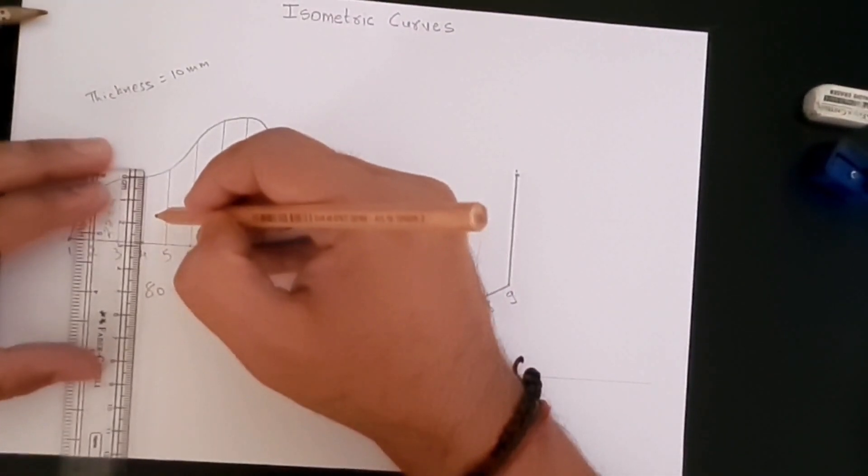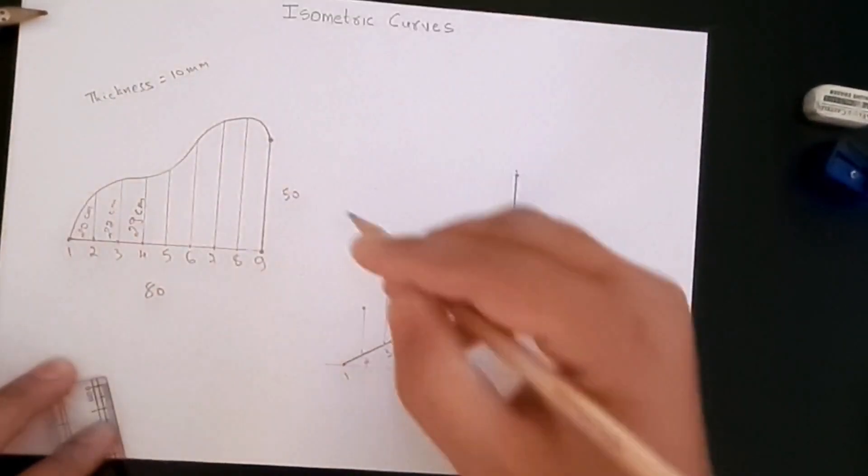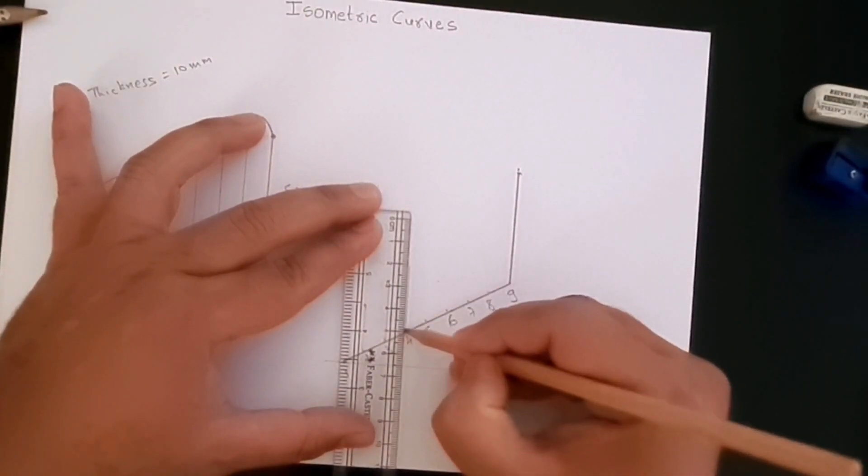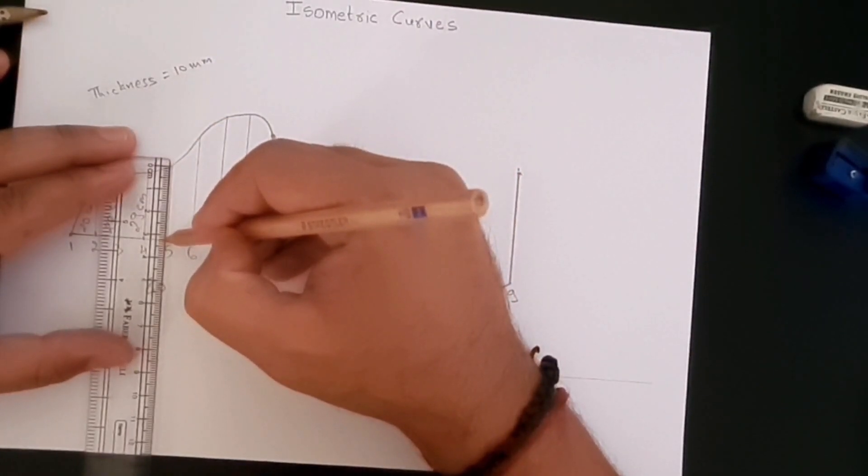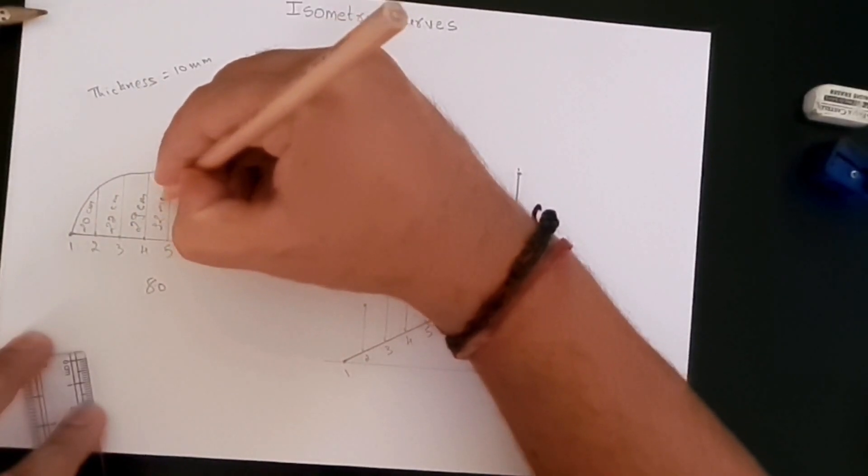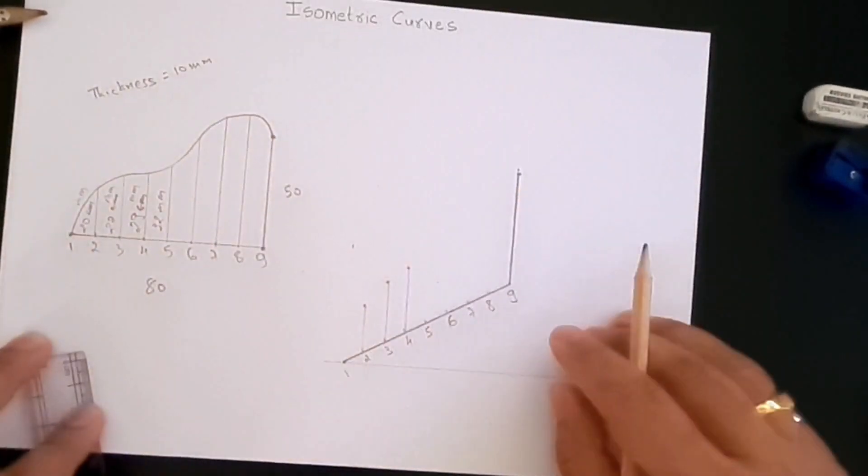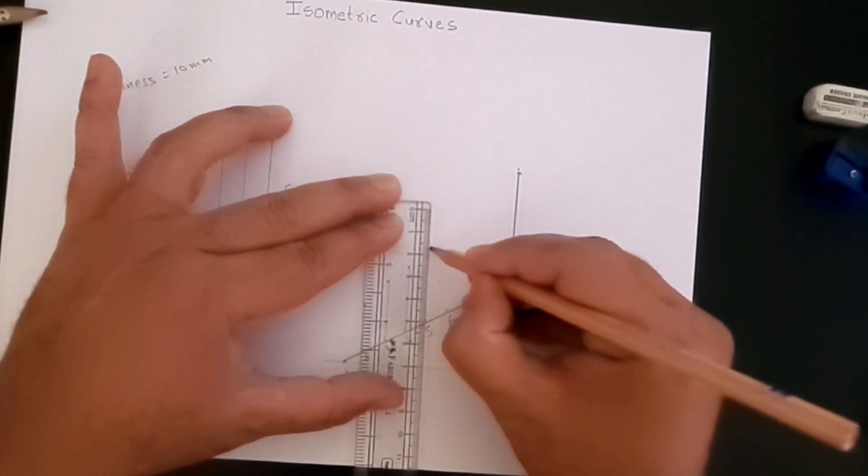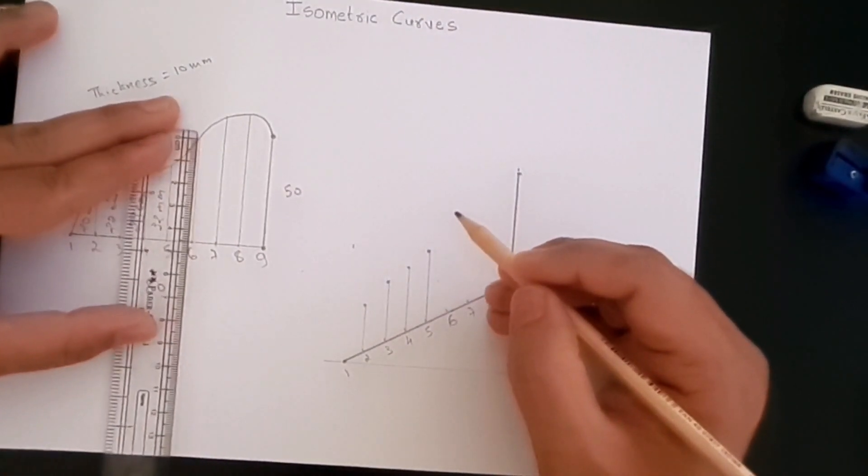Point number four has the height of 29, so at four we'll have 29: 10, 20, 29. At point number five we have 32 millimeters, so all of these are in millimeters. At point number five, 32 millimeters: 10, 20, 30, one, 32. Here, that's our point number five.